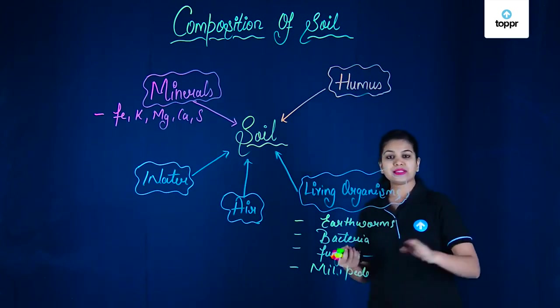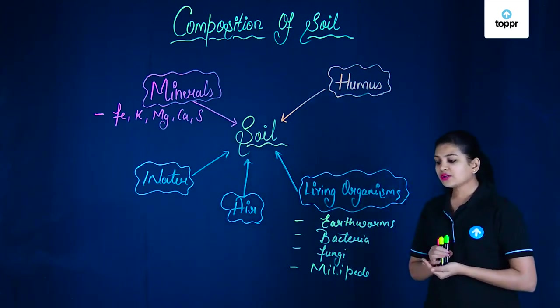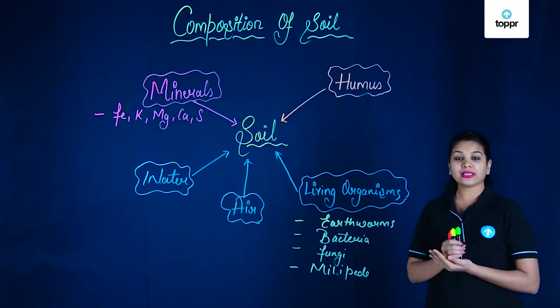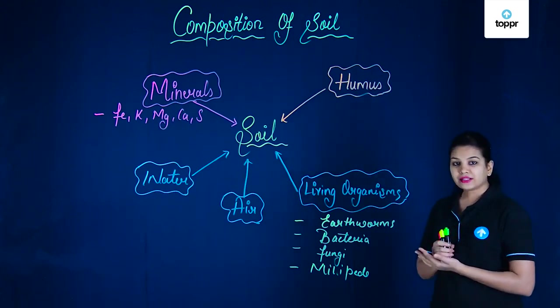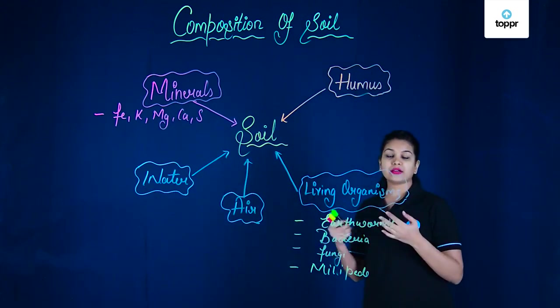Next is millipedes and centipedes. Well these are not really very useful for the soil. They can be harmful also as they destroy a number of plants, their roots etc.